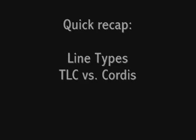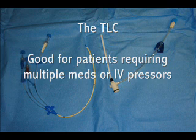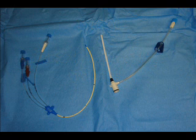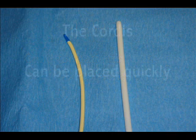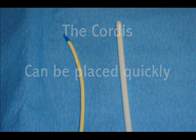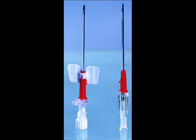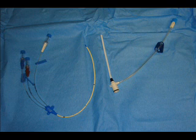Here's a quick recap of the differences between triple lumen and cordis catheters. The triple lumen is ideal for a patient requiring multiple different IV meds or IV pressors — for example, a septic patient that's already been volume resuscitated. The cordis, on the other hand, is great for infusing large volumes, so trauma patients or people losing blood in their GI tract need a cordis catheter. That said, the cordis is no match for two 14-gauge peripheral IVs when it comes to infusing large amounts of fluid. The bottom line: always default to placing a cordis catheter if you're not sure what's going on.